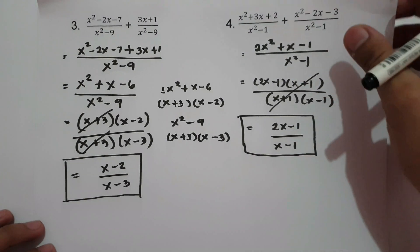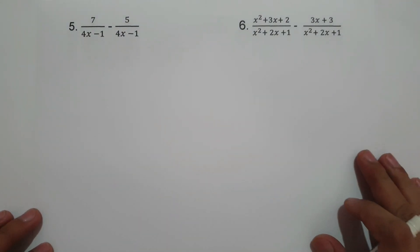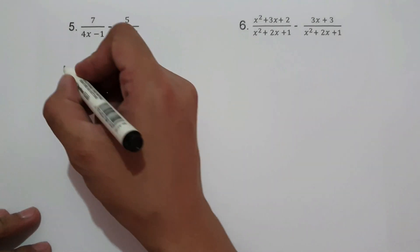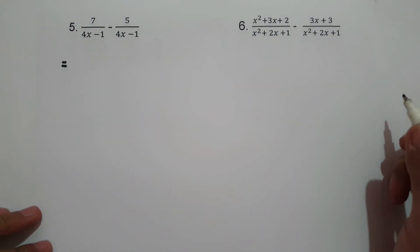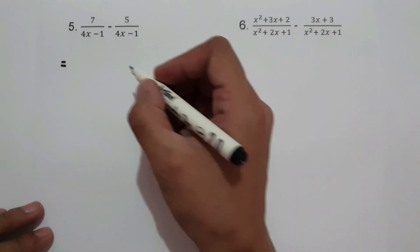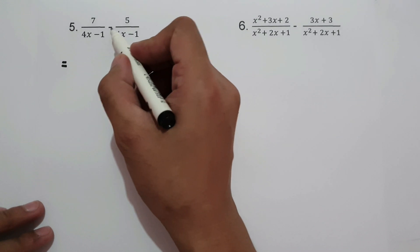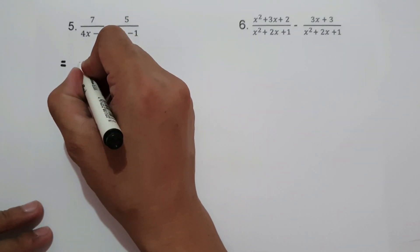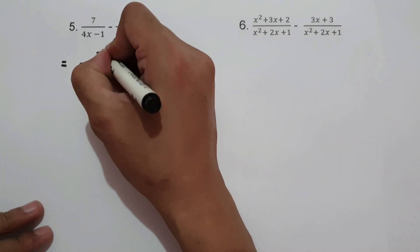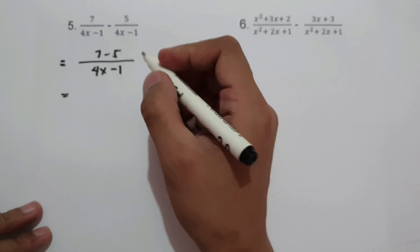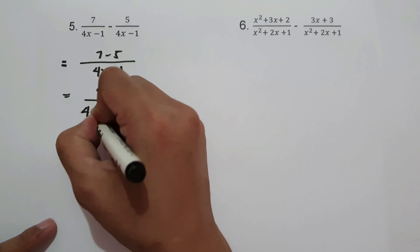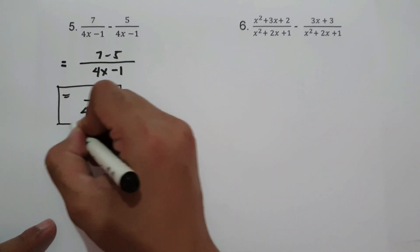On number 5 and number 6, the operation is subtraction. Whenever we add or subtract rational expressions with the same denominator, we simply copy the denominator and add or subtract the numerator. For number 5: 7 over (4x minus 1) minus 5 over (4x minus 1). We copy the denominator 4x minus 1, and 7 minus 5 is 2. So the final answer is 2 over (4x minus 1).